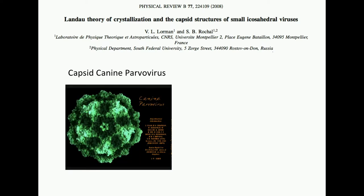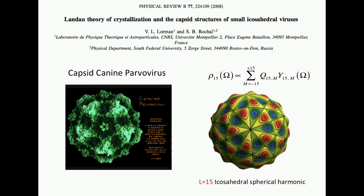And so now we come to this paper by Lorman and Rochelle. So now we've gone over this intellectual background. And here's a picture of the capsid canine parvovirus, which is the smallest. Parvo means small. So this is a small virus. And Lorman and Rochelle noticed that the density of these kind of viruses can be very nicely explained in terms of an expansion in spherical harmonics.